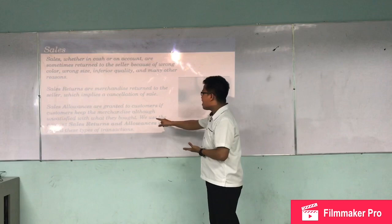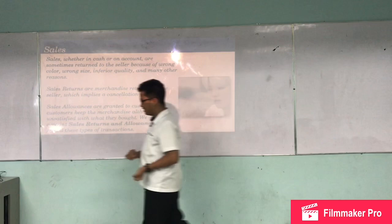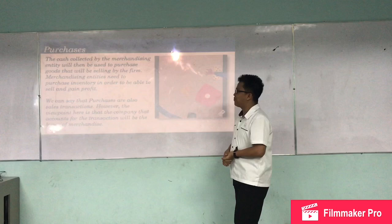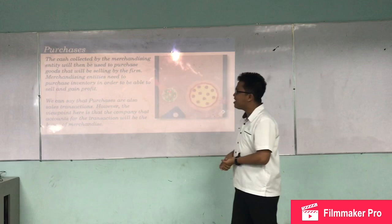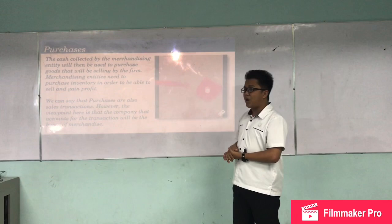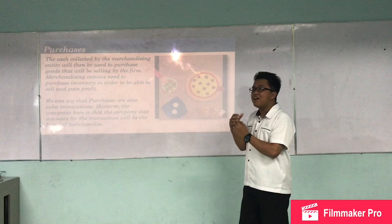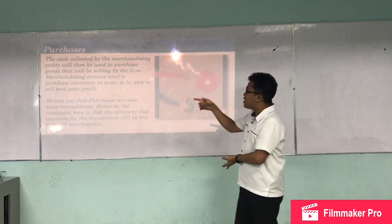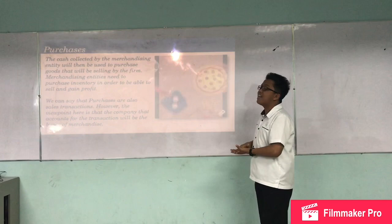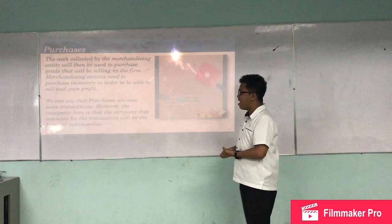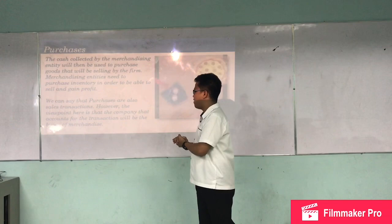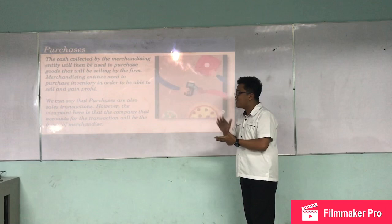The cash collected by the merchandising entity will then be used to purchase goods for selling. Merchandising entities need to purchase inventory in order to be able to sell and gain profit. We can say that purchases are also sales transactions; however, the viewpoint here is that the company accounting for the transaction is the buyer of the merchandise.